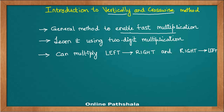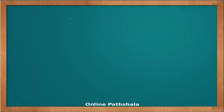We will use simple two-digit multiplications to first understand the method. It is always a good idea to take simple examples to understand the method and then apply it to more complex multiplications, to see how it helps you do much faster calculations compared to the conventional method. One notable thing about this vertically and crosswise method is that we can multiply from left to right or from right to left — either way, you will still get the same answer.